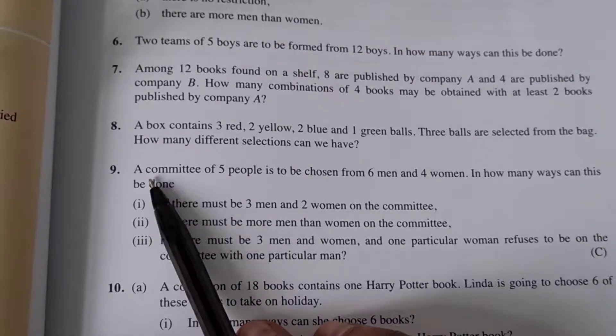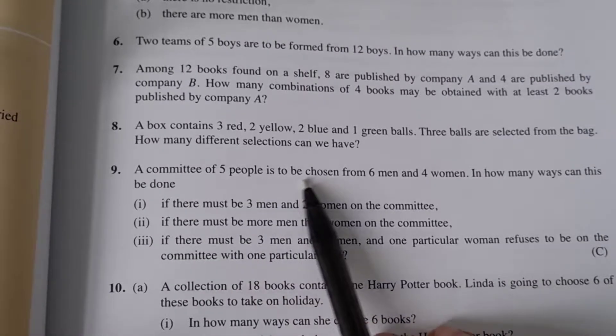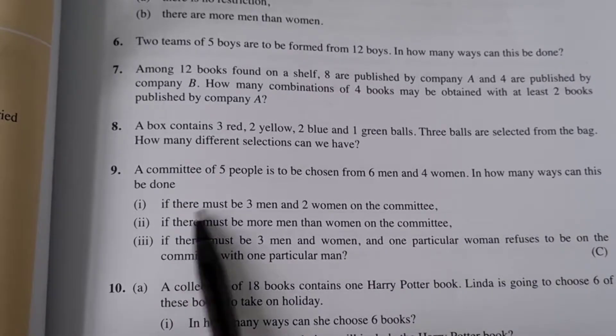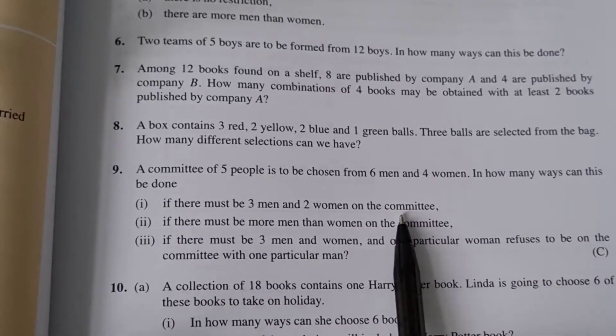Hi, question number nine. A committee of five people is to be chosen from six men and four women. In how many ways can this be done if there must be three men and two women on the committee?